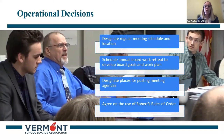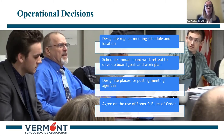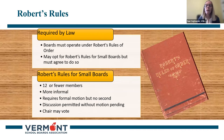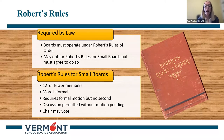The reorganizational meeting is also a time to make operational decisions such as designating the board's regular meeting schedule and location, scheduling an annual board retreat to develop board goals and a work plan, and agreeing on the use of Robert's Rules of Order. Vermont law requires boards to use Robert's Rules of Order. Boards with 12 or fewer members may opt to use Robert's Rules for small boards but must agree to do so. When using Robert's Rules for small boards, motions need not be seconded, informal discussion is permitted while no motion is pending, a vote can be taken without a motion being introduced if a proposal is clear to all present, and the chair may — without leaving the chair — speak in informal discussions and vote on all questions.